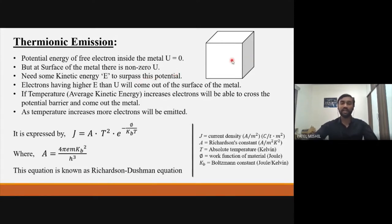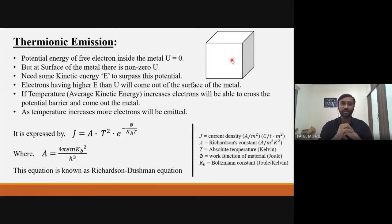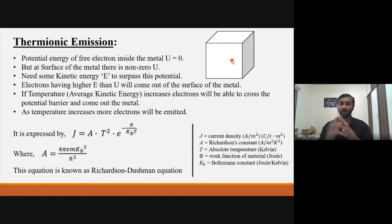I can explain this with an example. Consider yourself in a hostel — your warden has set a rule that you cannot go outside after 10 pm. So your condition is like a free electron: you can move anywhere inside the hostel, go to your friend's room, but you cannot go outside. Similarly, free electrons cannot come out of the surface because this potential will stop them.